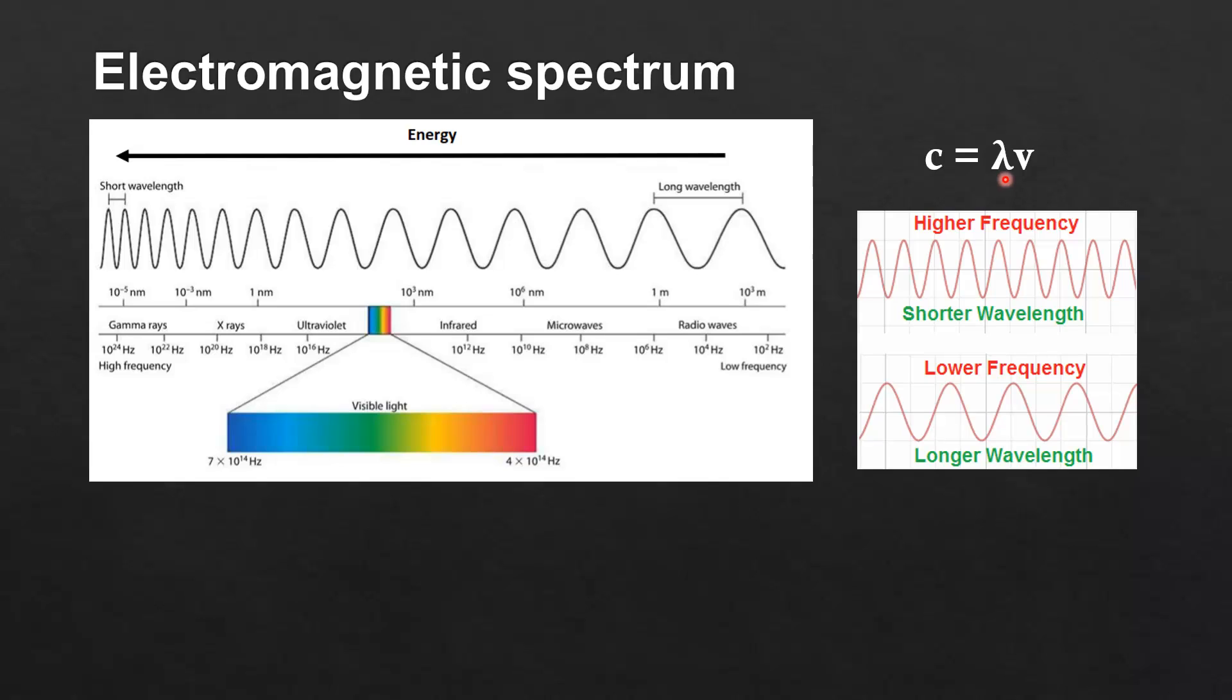So frequency is inversely proportional to wavelength. If you have a higher frequency you have a shorter wavelength. If you have a longer wavelength you have a lower frequency.